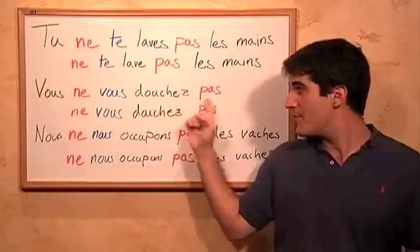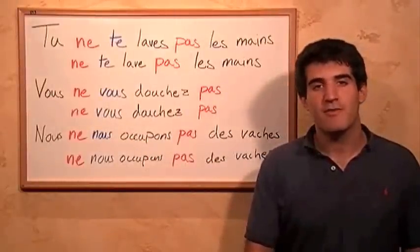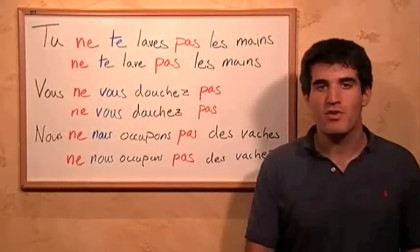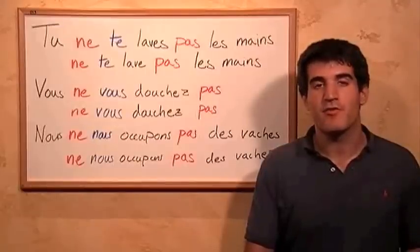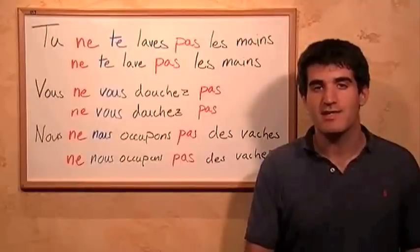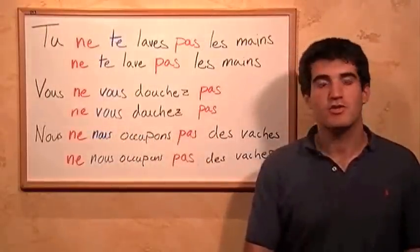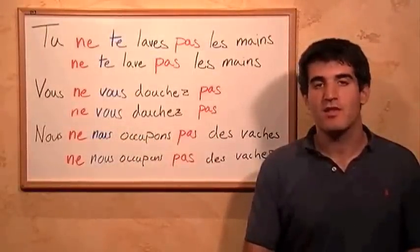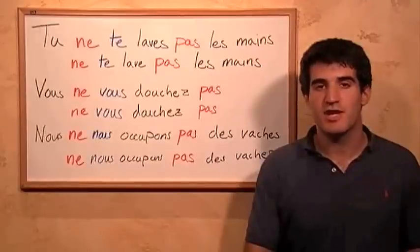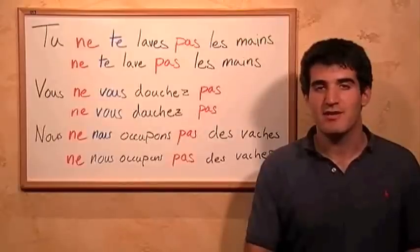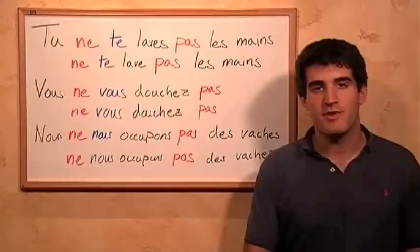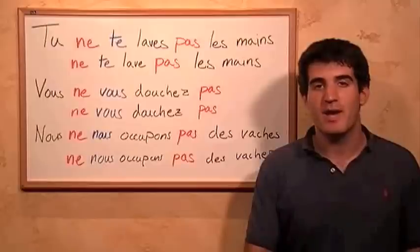Vous ne vous douchez pas. But if we want to say 'don't shower' as a command, we just take away the vous at the beginning, so it becomes ne vous douchez pas. The verb still has to correspond to the subject vous, so it has to have that -ez ending. It can't have any other ending because as a reflexive verb, the subject and the object are the same. So it's ne vous douchez pas — don't shower.